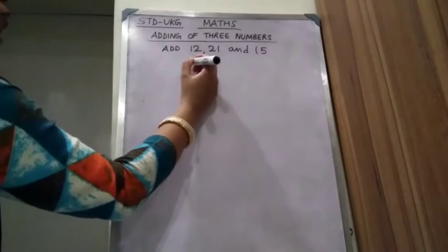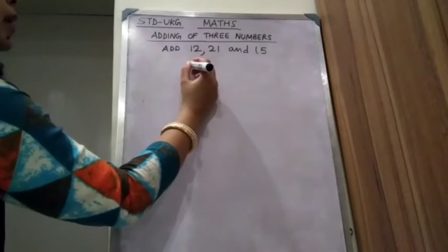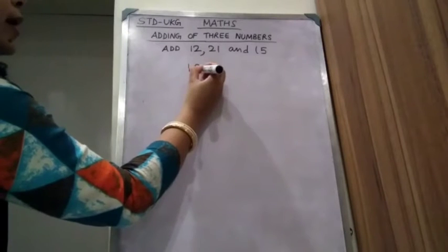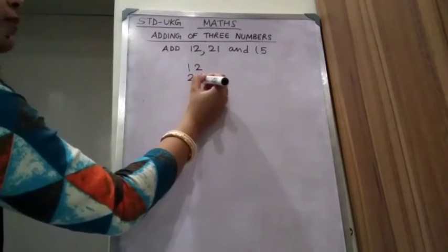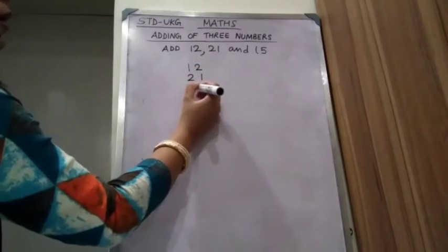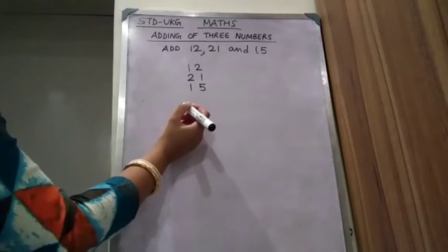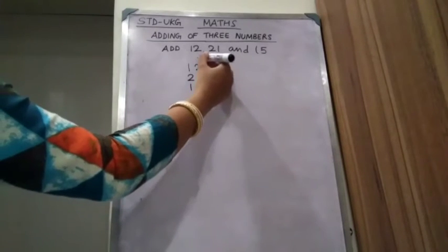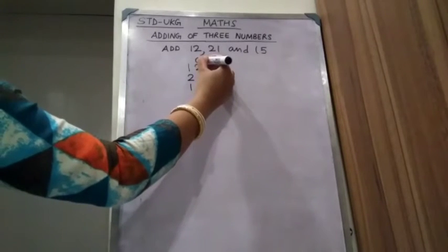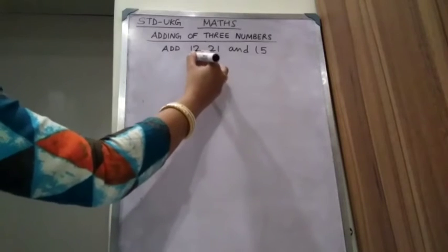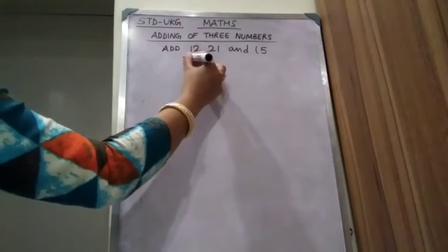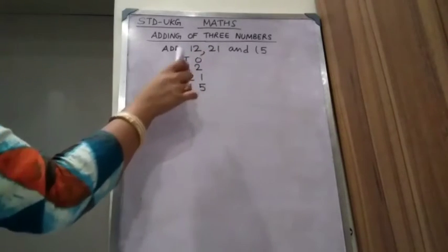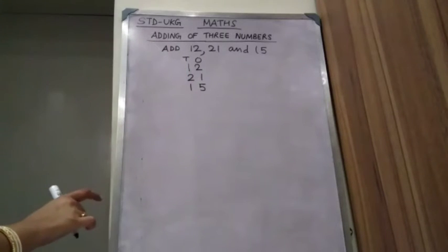So how we are going to add this? First, you write in the numbers: 12, 21, 15. This is the ones column and this is the tens column. We will write like this — ones, tens.